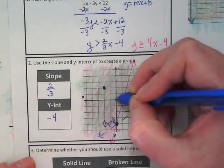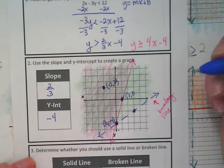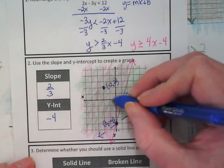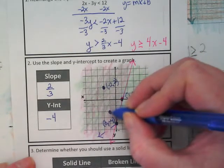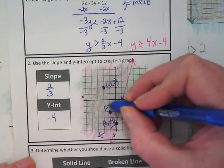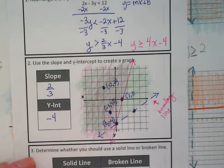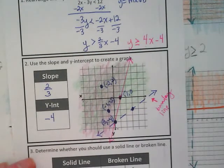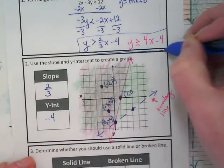Find some other points. Like this is negative 2 comma 2. This is negative 1 comma negative 2. Anywhere where there's an exact point in the double shaded region is an answer for this system of inequalities.